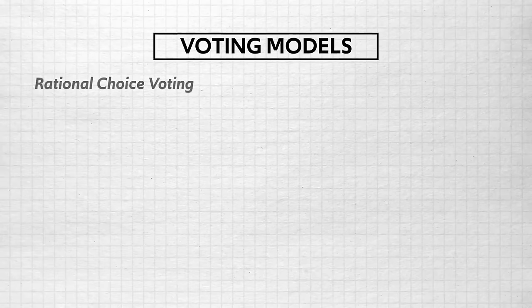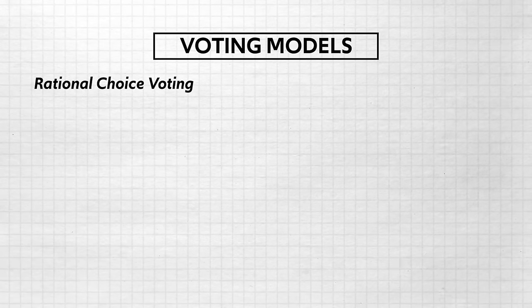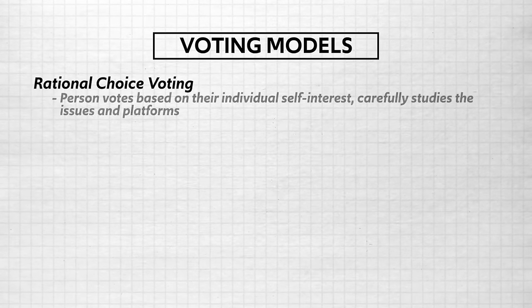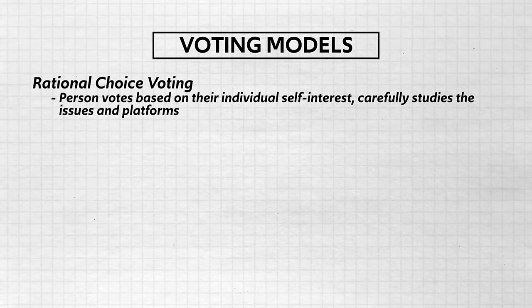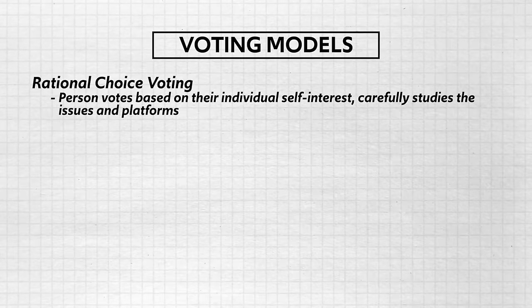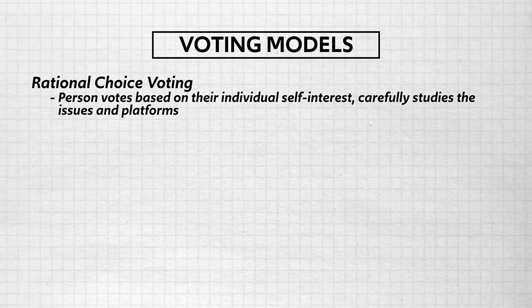Now that we've established who can vote, let's look at the four ways that inform the way people vote. The first model for voting behavior is called rational choice voting. This is when a person votes based on their individual self-interest and who has carefully studied the issues and platforms. In other words, they have studied the issues and the candidates carefully and they make a rational choice.